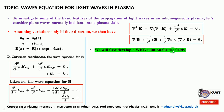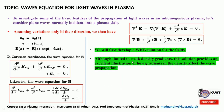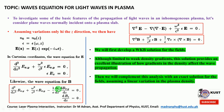In the next class we will develop the WKB solution for the fields, solving these two sets of equations under the WKB approximation. Although the WKB solution is limited to weak density gradients, it provides an excellent illustration of how density gradients in inhomogeneous plasma affect wave propagation. Once the approximate solution is obtained, we will complement this analysis with the exact solution assuming a linear variation in plasma density.